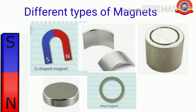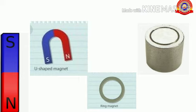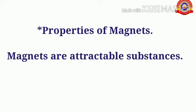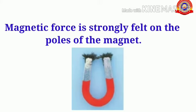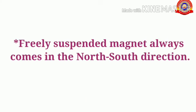Then we discussed about the different types of magnets and also we discussed the uses of magnets and its properties. First, magnets attract magnetic substances. Magnetic force is strongly felt on the poles of the magnet. A freely suspended magnet always comes in the north-south direction.